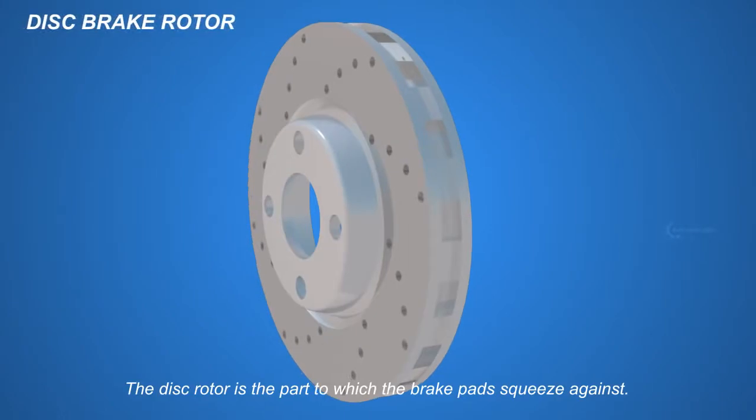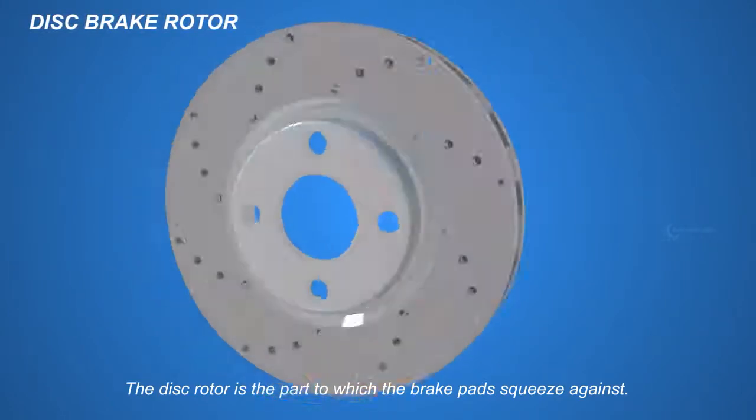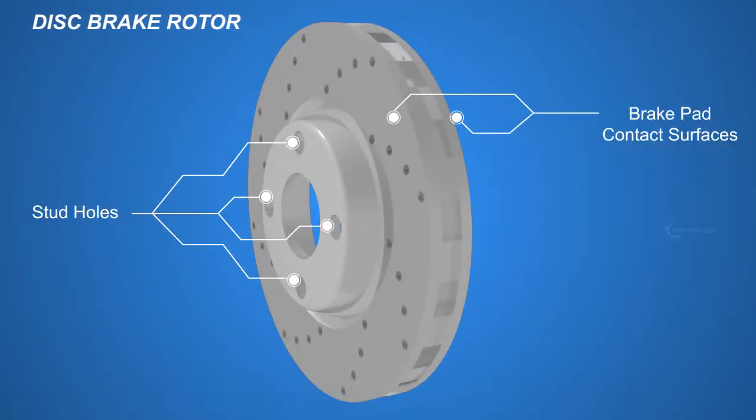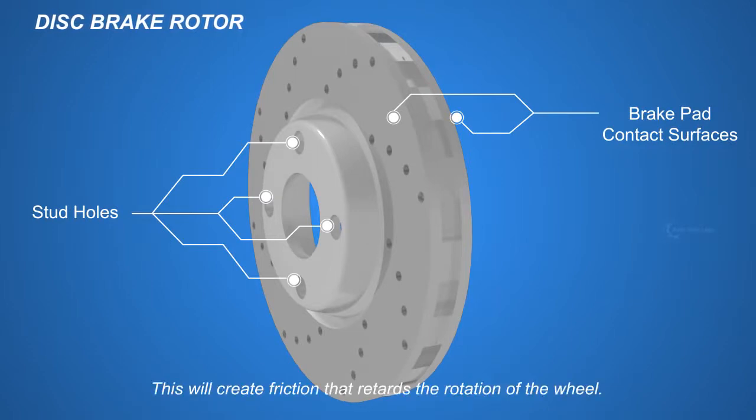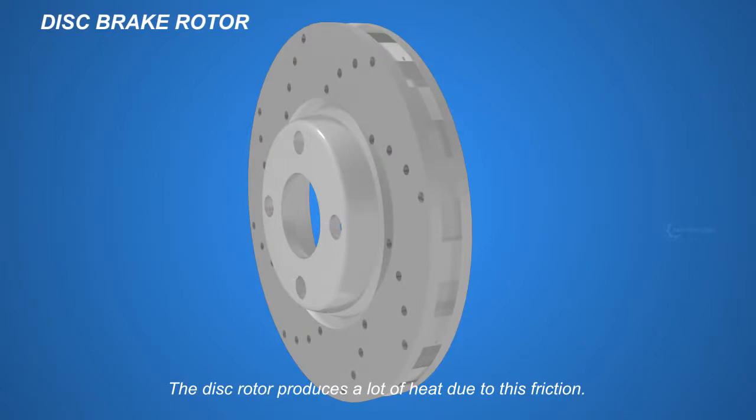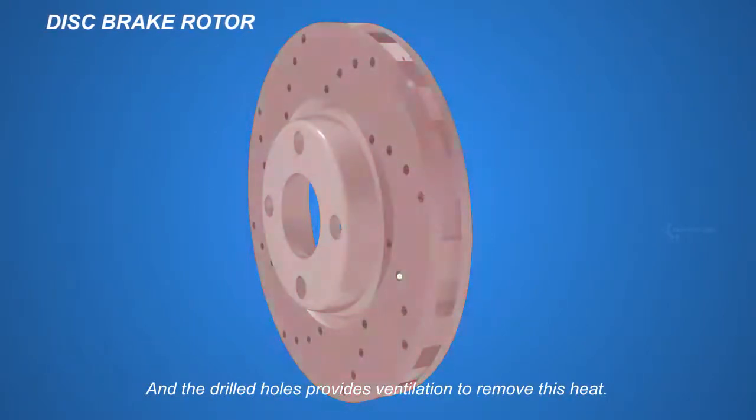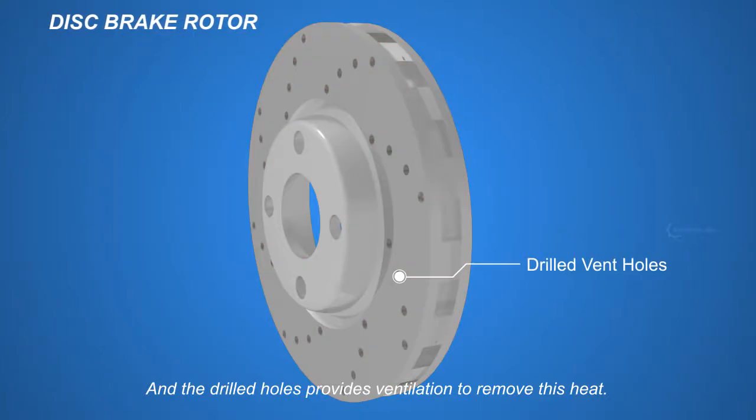The disc rotor is the part to which the brake pads squeeze against. This will create friction that retards the rotation of the wheel. The disc rotor produces a lot of heat due to this friction, and the drilled holes provide ventilation to remove this heat.